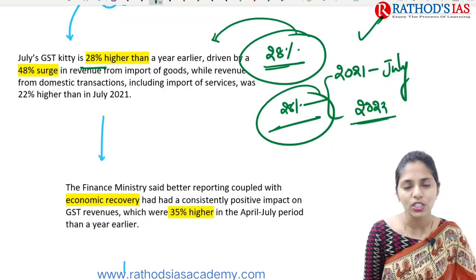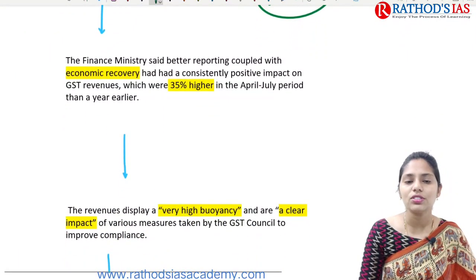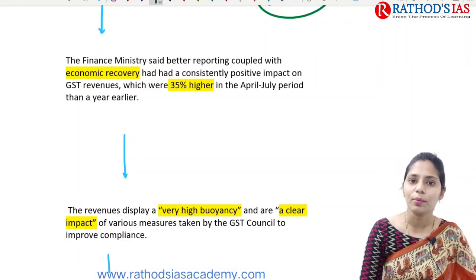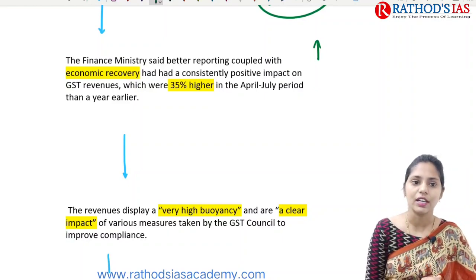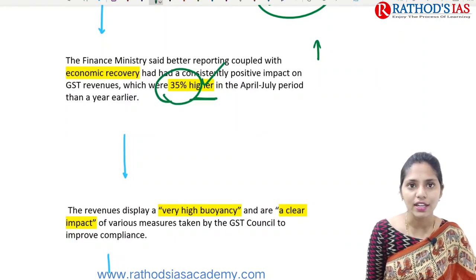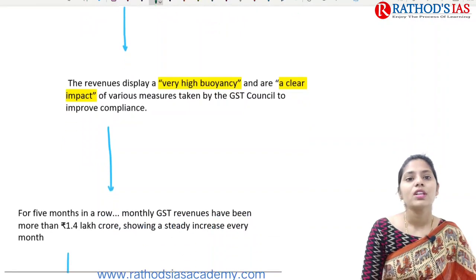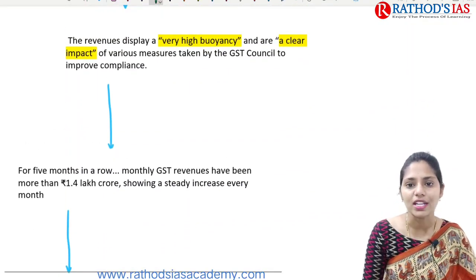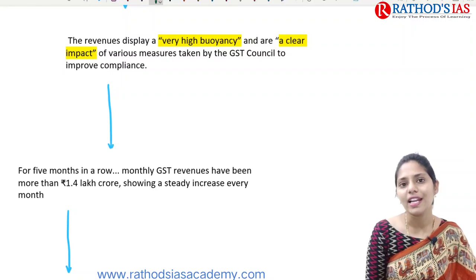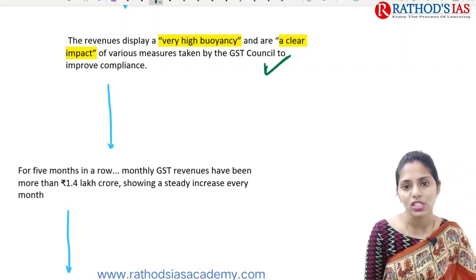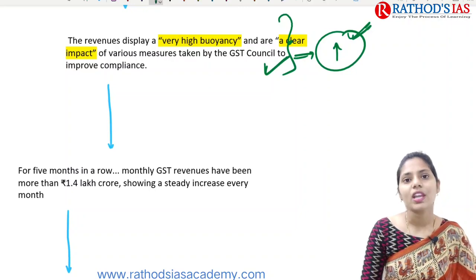During this time we saw economic slowdown due to COVID-19 imposed lockdowns. The finance ministry said that better reporting coupled with economic recovery is a sign of this increase. There were about 35% higher revenues seen in the April to July period compared to 2021. The revenue displays very high buoyancy and a clear impact of the various measures taken by the GST council.